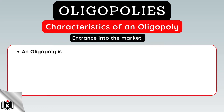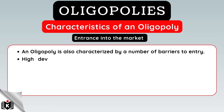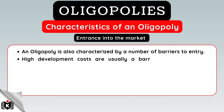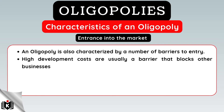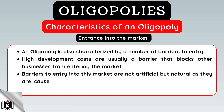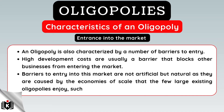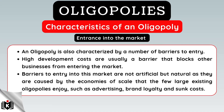An oligopoly market structure is also characterized by a number of barriers to entry. High development costs are usually a barrier that blocks other businesses from entering the market. Barriers to entry into this market are not artificial but natural, as they are caused by the economies of scale that the few large existing oligopolies enjoy, such as advertising, brand loyalty, and sunk costs.